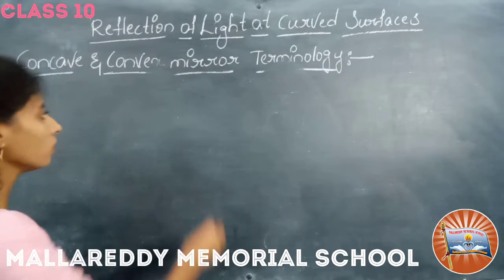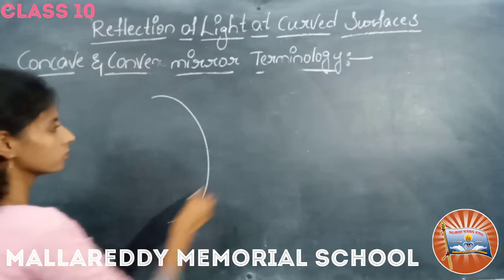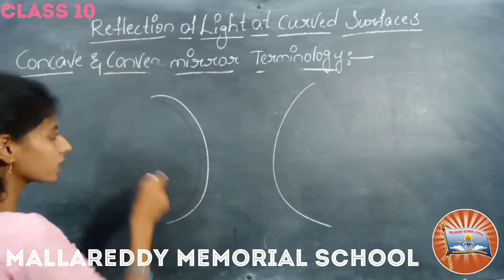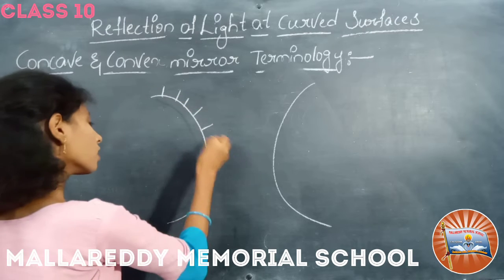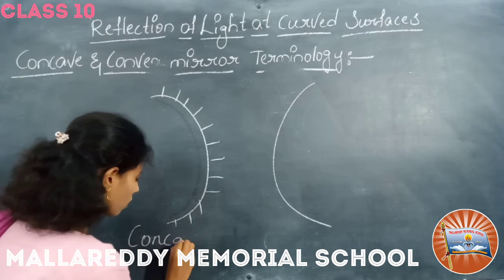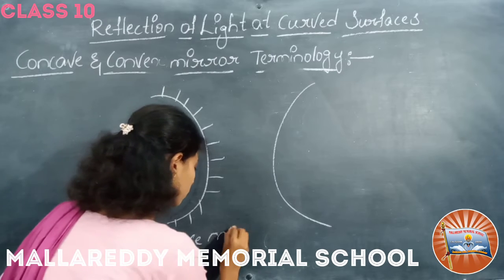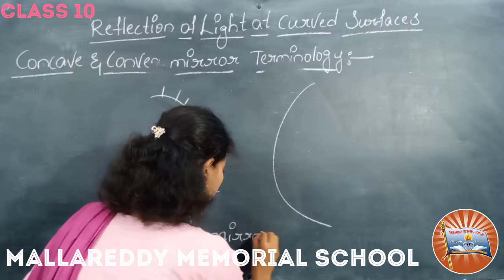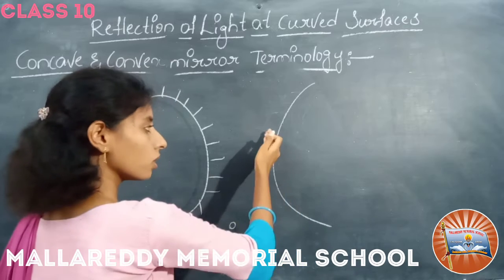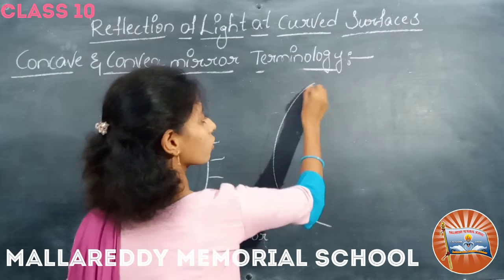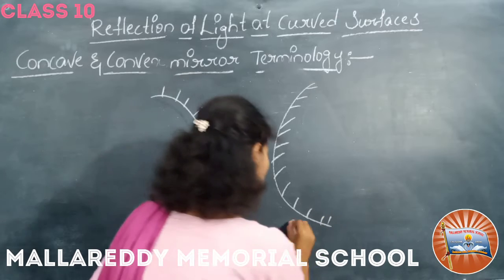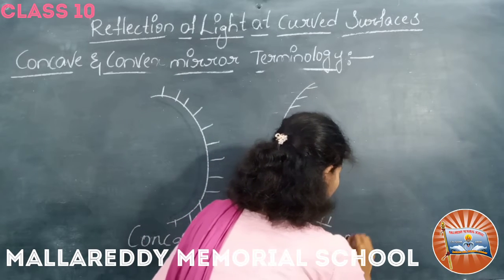So here I want to draw. The mirror which is polished inside and coated outside is the concave mirror, and the mirror which is polished outside and coated inside is the convex mirror.